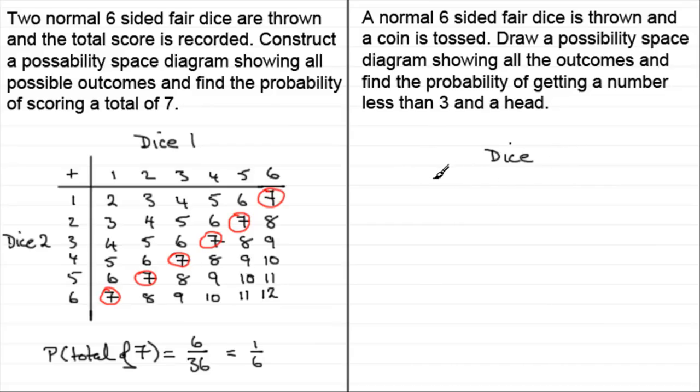So it would have the fact that we could get a one, a two, three, four, five, or six. And then down here, I'll have the coin. And on the coin, you could either obviously get a head or a tail.